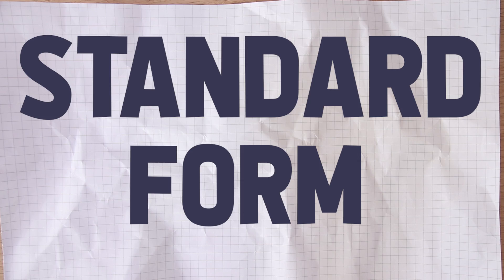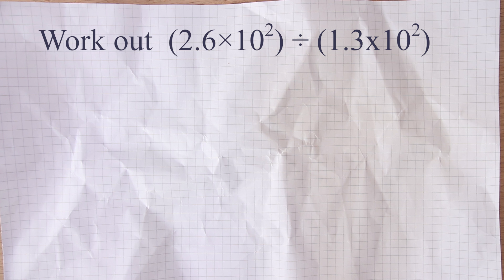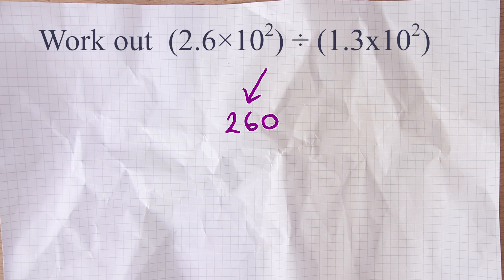The first thing I want to look at is to do with standard form and the way that you type those calculations into your calculator. The example I'm looking at is 2.6 times 10 squared divided by 1.3 times 10 squared. If we think about that, 2.6 times 10 squared is 260, divided by 1.3 times 10 squared which is 130, so the answer should be 2.